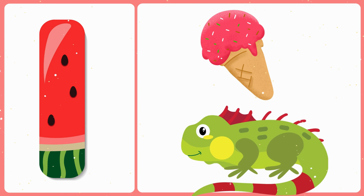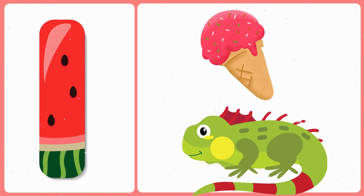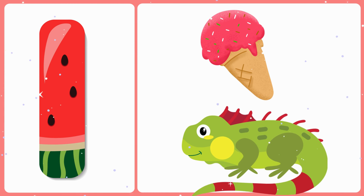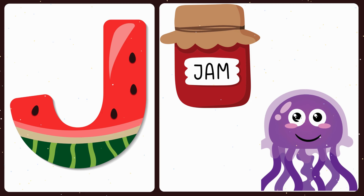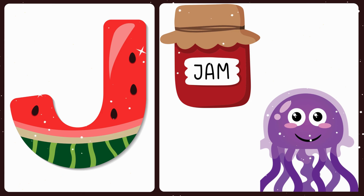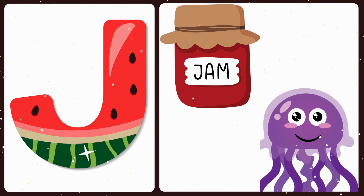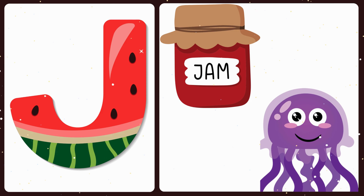I — I is for ice cream, I is for iguana. J — J is for jam, J is for jellyfish.